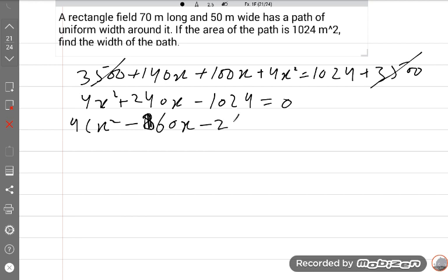So it is the simple equation now with short numbers: x² + 60x - 256 = 0.